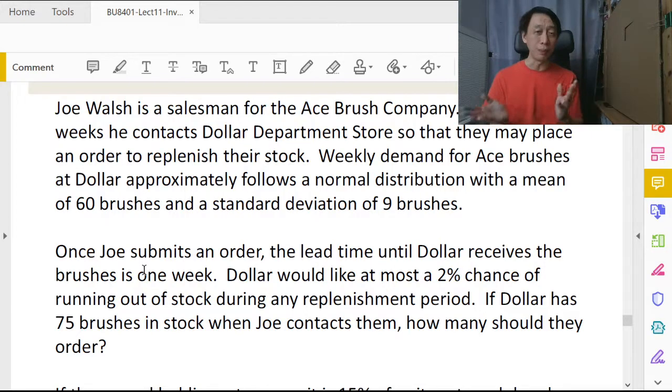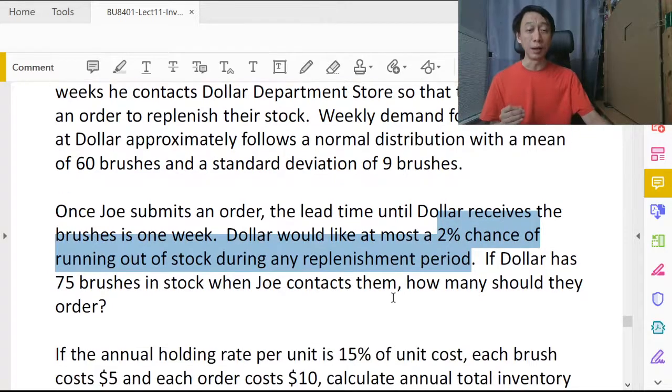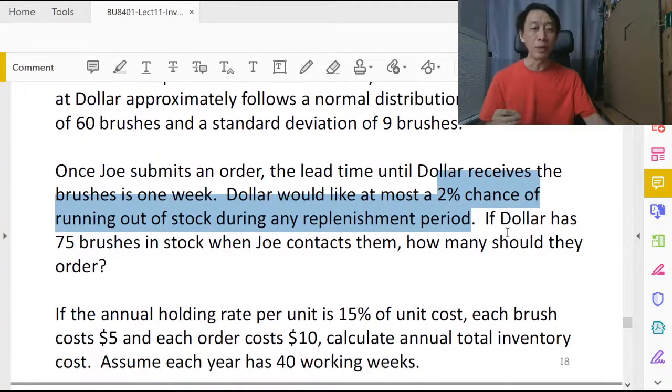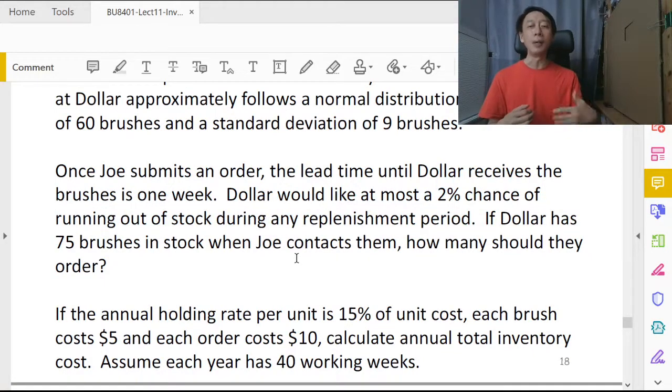Dollar would like a stock-out probability of two percent, therefore a service level of ninety-eight percent. So currently Dollar has 75 brushes. How many should we order?